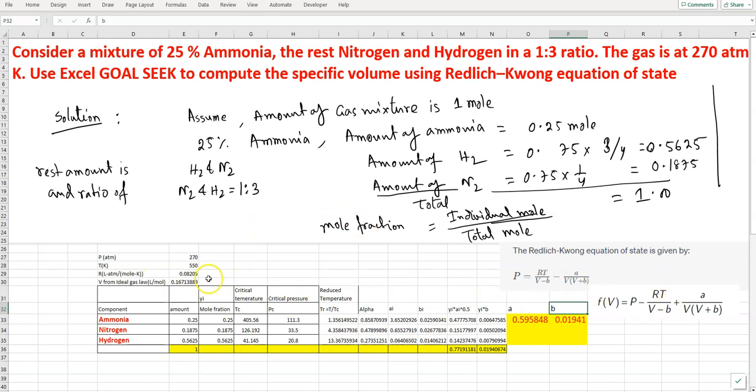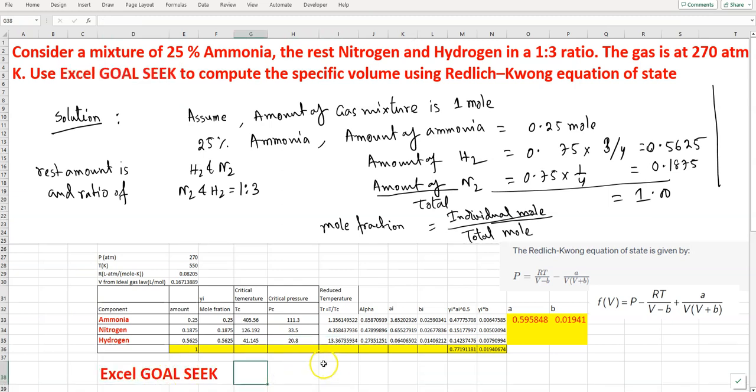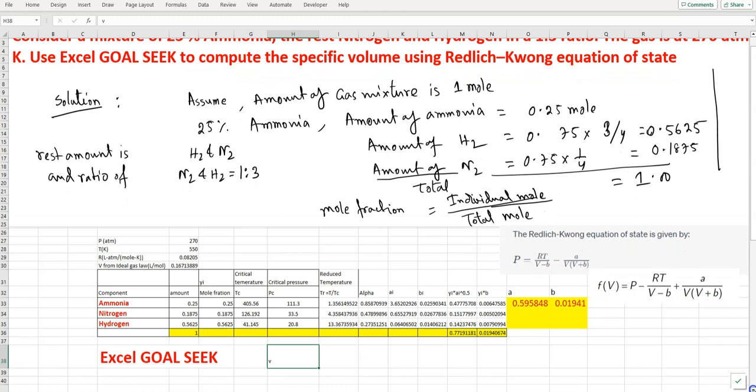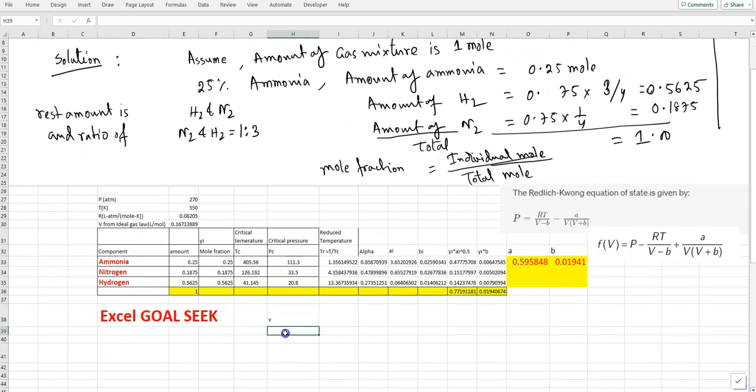I'm solving for specific volume using the Redlich-Kwong equation of state with Excel Goal Seek. For this we need a V value. First I'll assume a value for V - we can start with an initial value here.